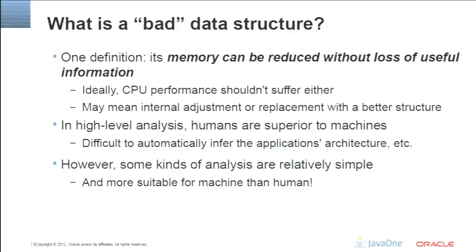What do we call bad data structures? One definition is that it's a data structure for which memory usage can be reduced without loss of useful information. This often involves the famous trade-off between CPU performance and memory usage. Not infrequently, fixing a bad data structure actually improves both: memory usage goes down and CPU performance improves as well, at least because of reduced GC time. Fixing a problematic data structure may mean internal adjustments or replacement with a better structure.